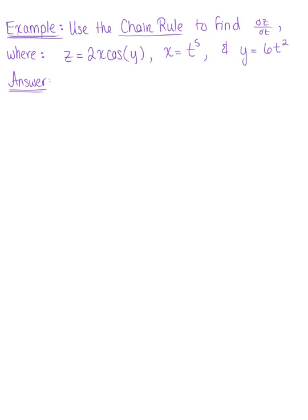The first thing I want to do here — and this is optional as you begin to feel more comfortable — is create a tree diagram for the chain rule. We're going to create a little tree diagram to determine what the formula is. We always start with the initial variable z, or however your function is defined.